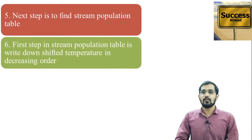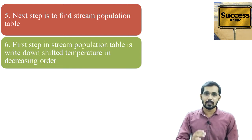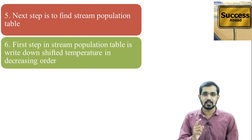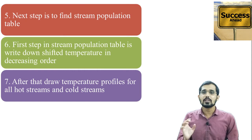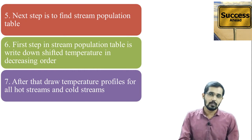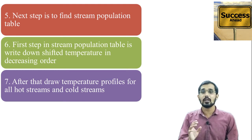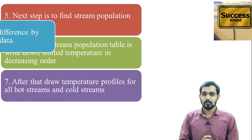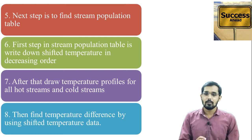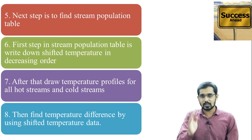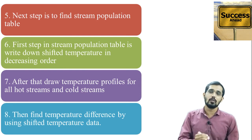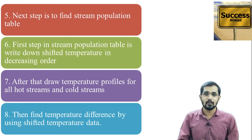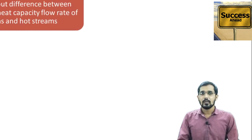In the stream population table, the first step is to write all shifted temperatures in decreasing order. After that, draw temperature profiles for all streams — both hot streams and cold streams. In the previous lecture, there were four streams: H1, H2, C1, and C2, so you draw temperature profiles for all of them. In the next column, write the temperature difference using the shifted temperature data.